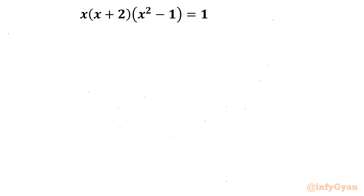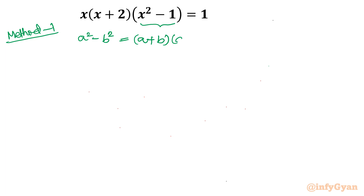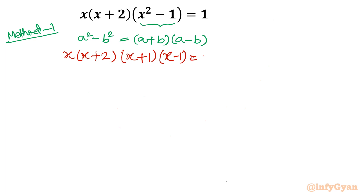First, let me write Method Number 1. I will begin with the identity I will use here: a squared minus b squared equals (a plus b)(a minus b), the difference of two squares. Applying this, I will write x times (x plus 2), then (x plus 1)(x minus 1) equal to 1.